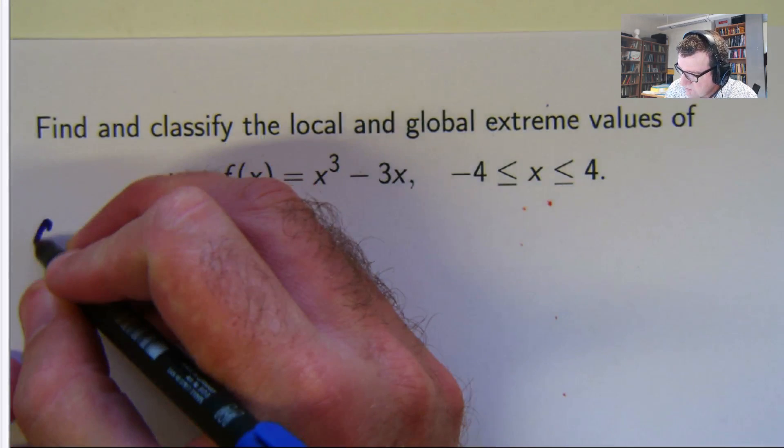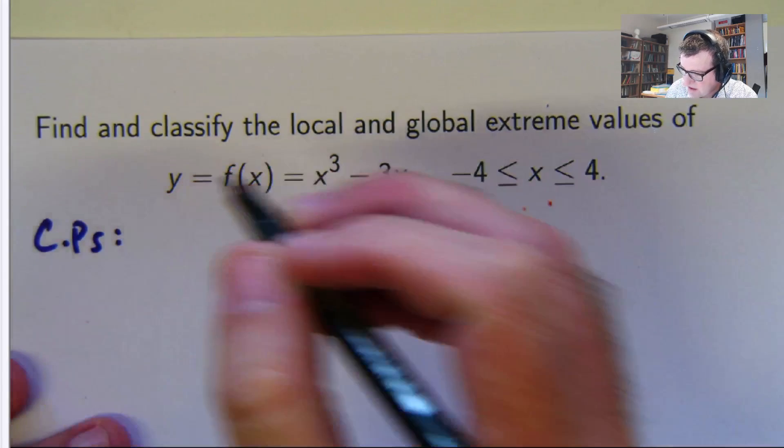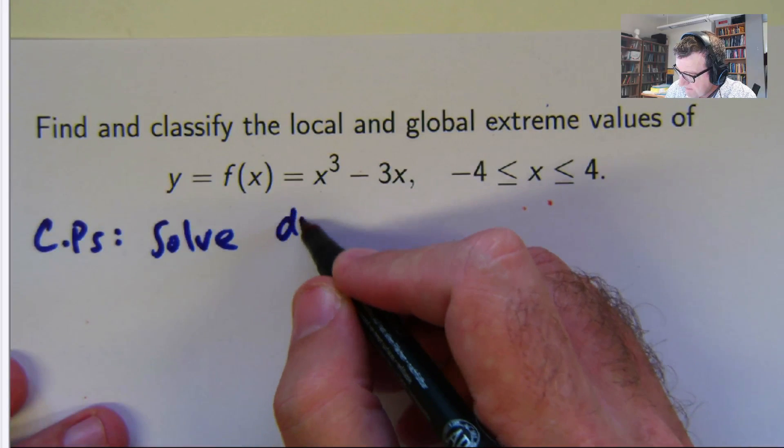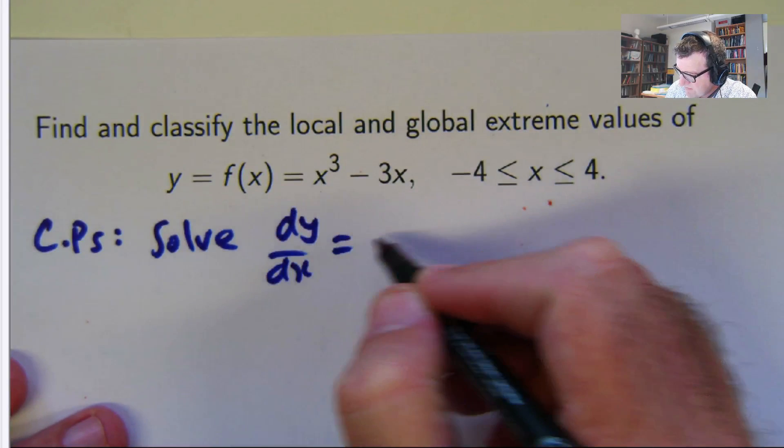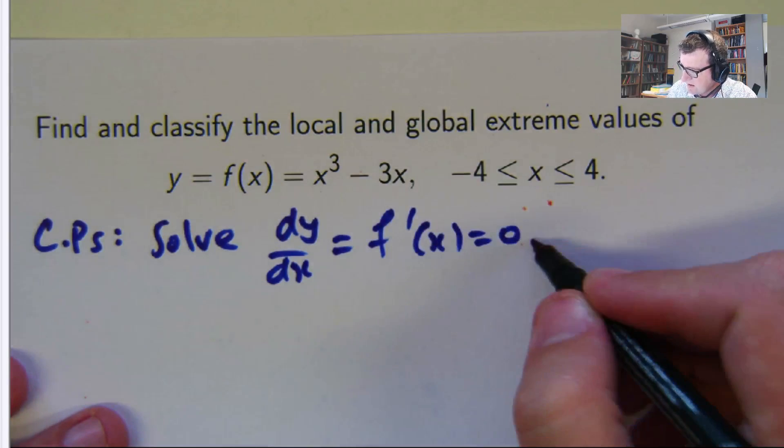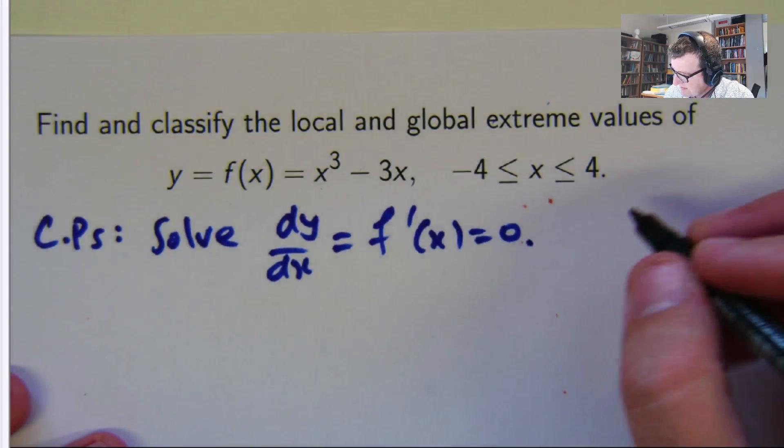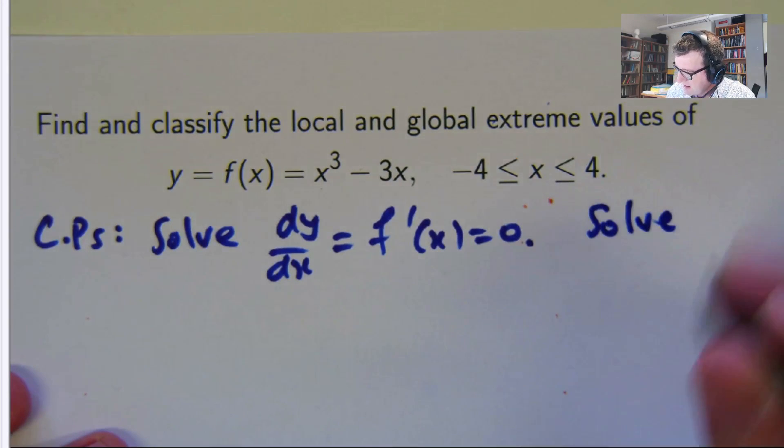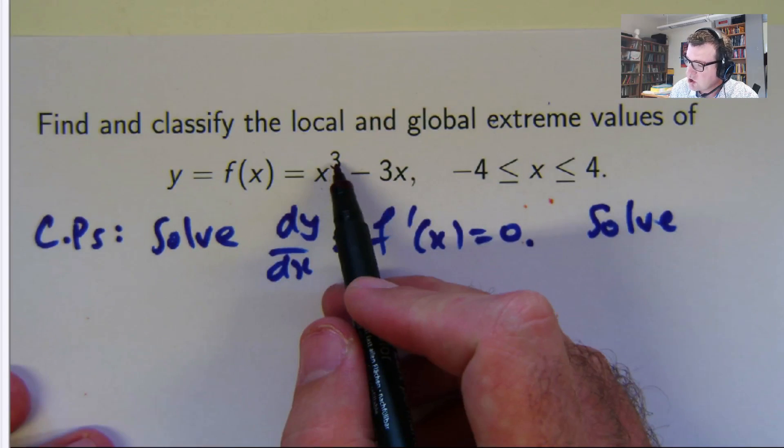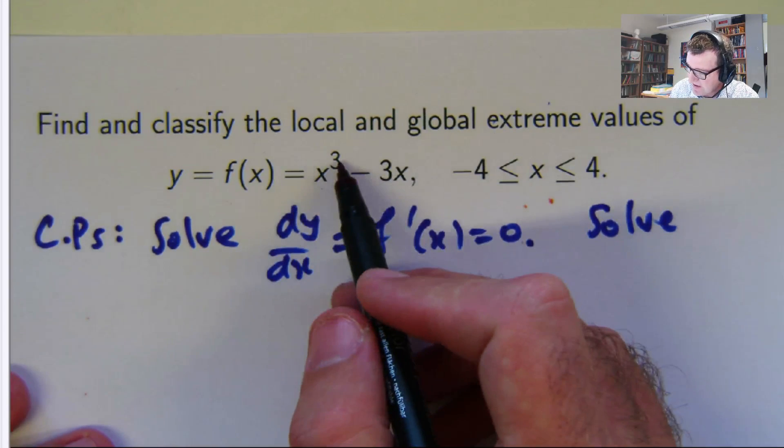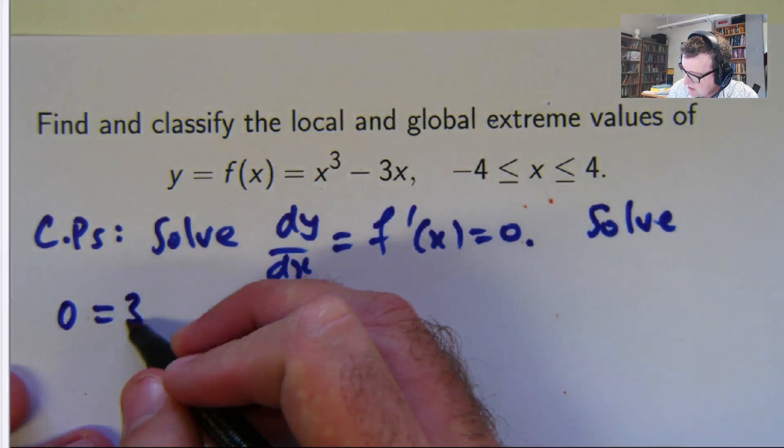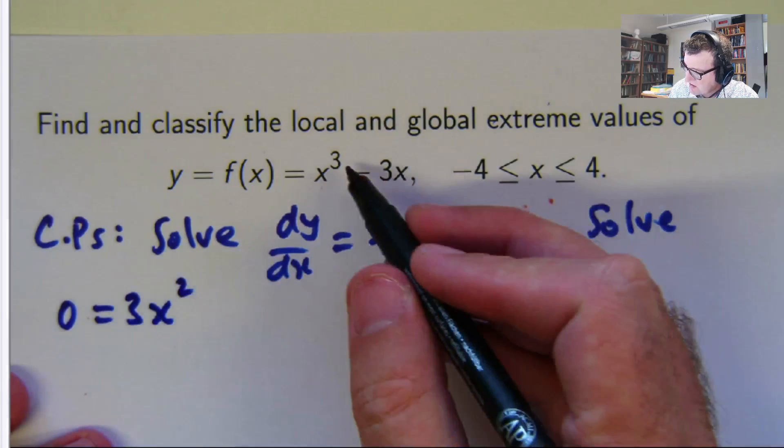So the critical points occur when the derivative is 0. So we're going to solve the derivative of that equals 0. So let's differentiate this. The x cubed will become 3x squared, because the power comes to the front,